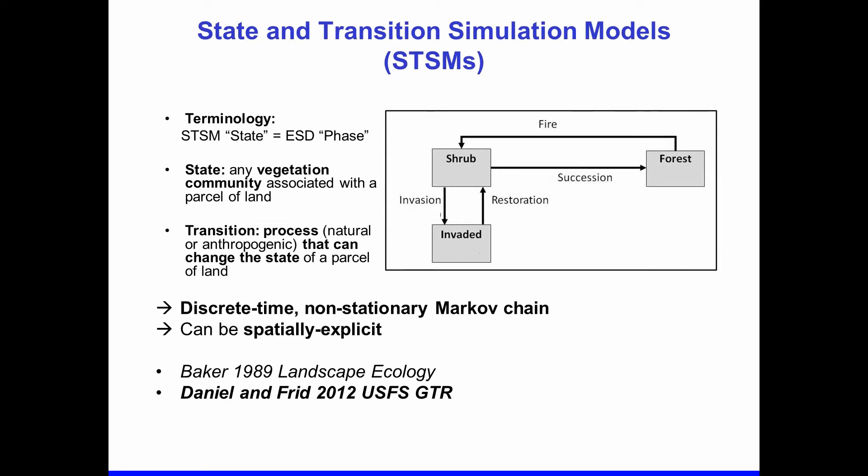State and transition simulation models begin with a conceptual model. To clarify terminology — many people will be familiar with ecological site description state and transition models — in the simulation models the term 'state' refers to what in the conceptual models would be the equivalent of a phase. Each vegetation state represents the possible vegetation communities which could occur at any one location on the landscape. Here is a simplified mock-up of a state and transition model with three possible vegetation states: a shrubland, a forest, and an invaded state. The arrows represent transitions that can move any one parcel of land between these states — succession moves shrubland to forest, fire moves forest to shrubland, invasion moves shrubland to invaded, and restoration moves invaded to shrubland.